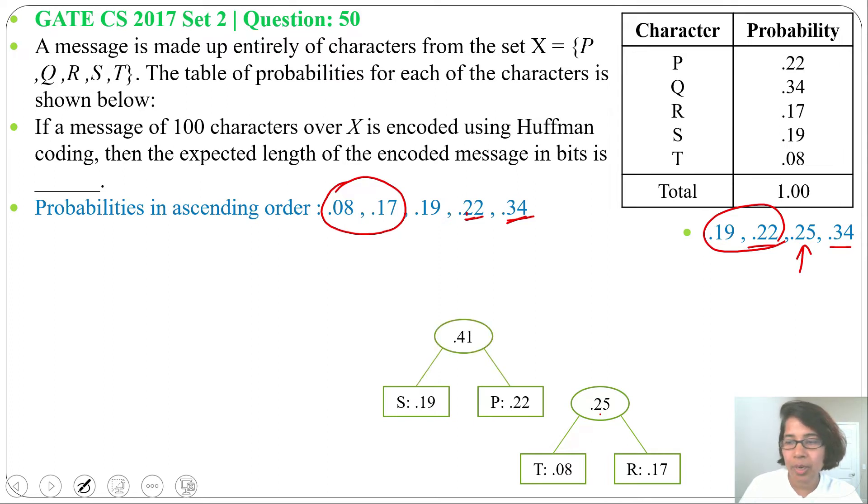Now 0.41 is greater than 0.34, so I will insert this 0.41 after 0.34.